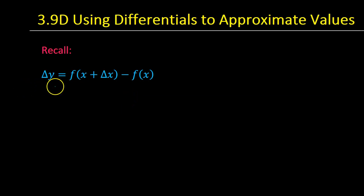We know that the change in y, or delta y, is equal to f of x plus delta x minus f of x. This is basically y2 minus y1.